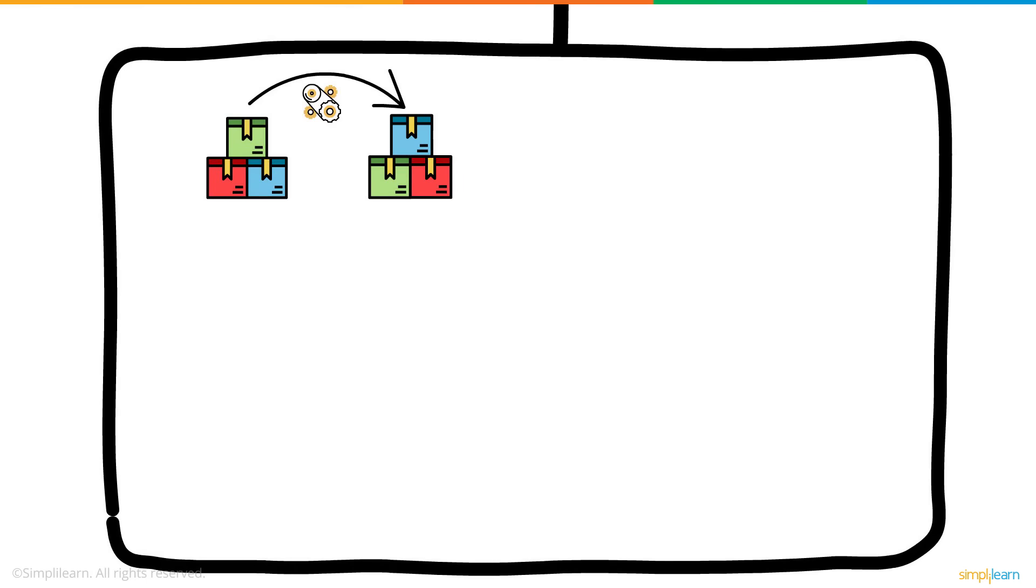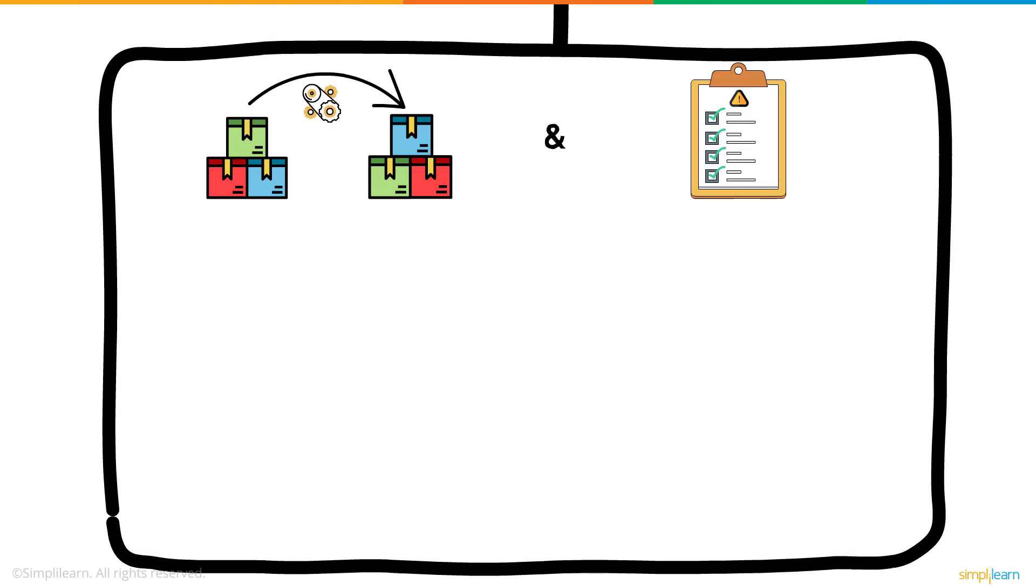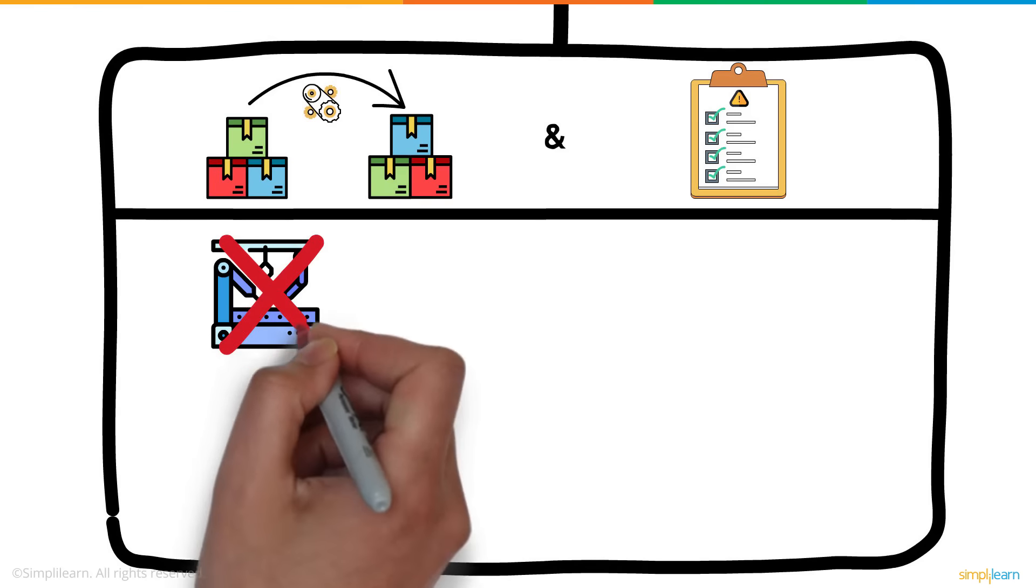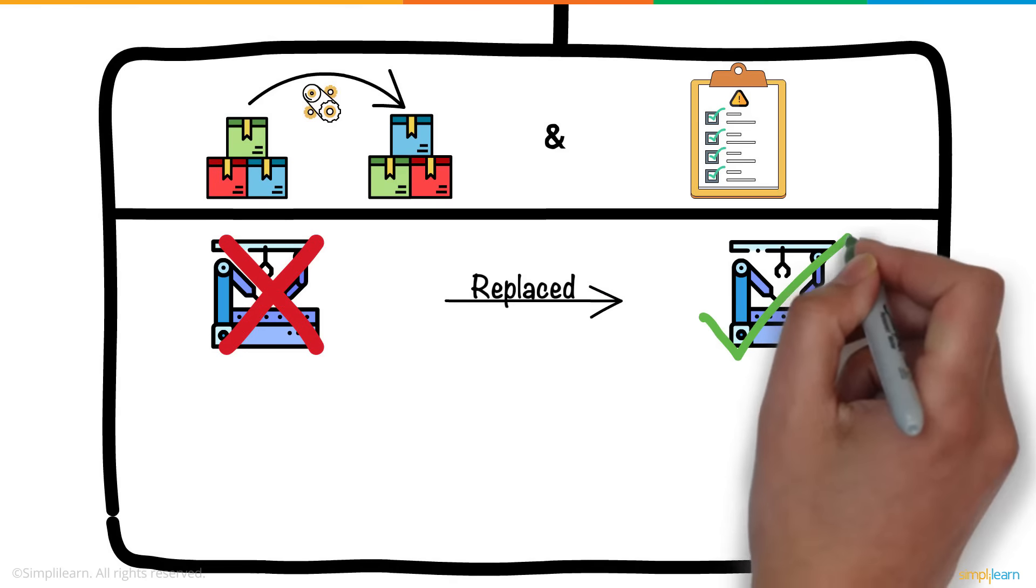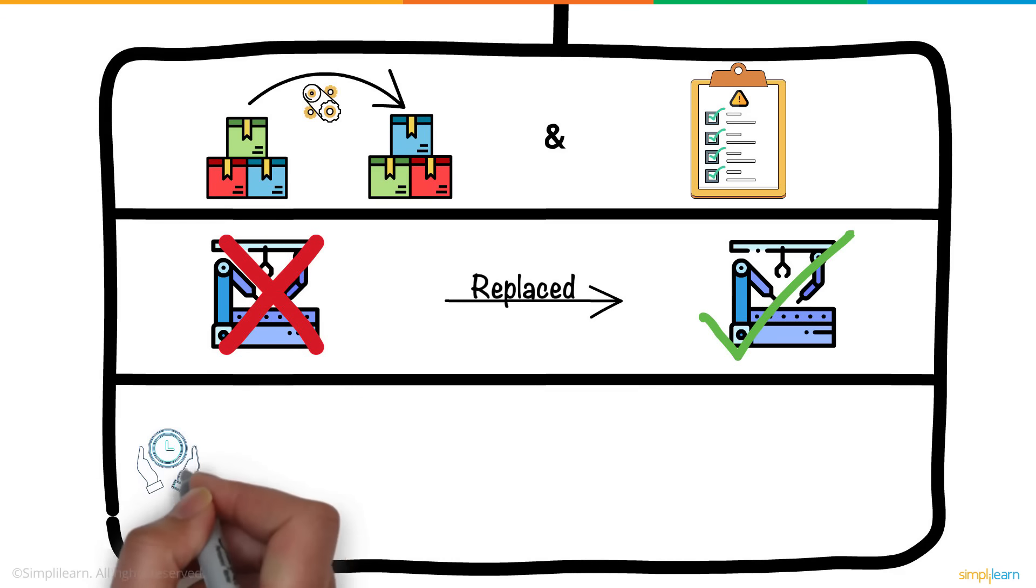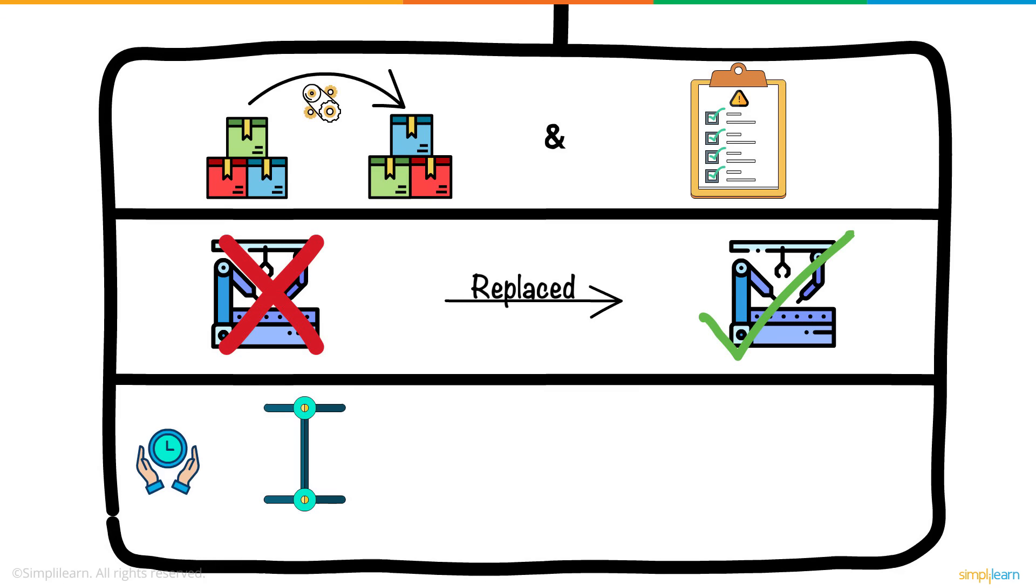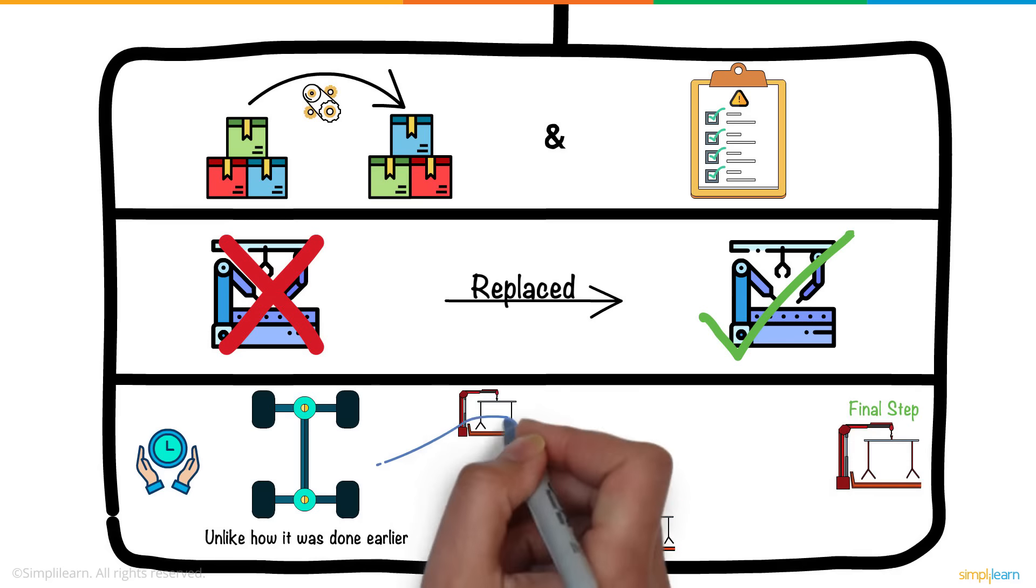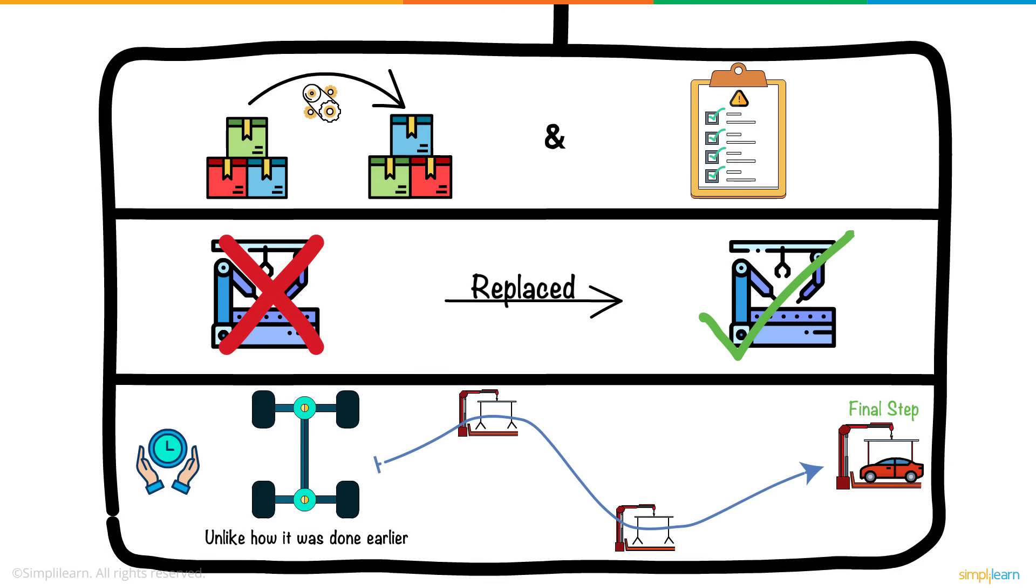Next, in the Improve phase, you make changes to the manufacturing process and ensure the defects are addressed. You replaced the faulty machines that installed the windshield wiper with another one. You also find a way to save time by attaching wheels on the frame in the initial stages of the manufacturing process, unlike how it was done earlier. Now the car can be moved across the assembly area faster.